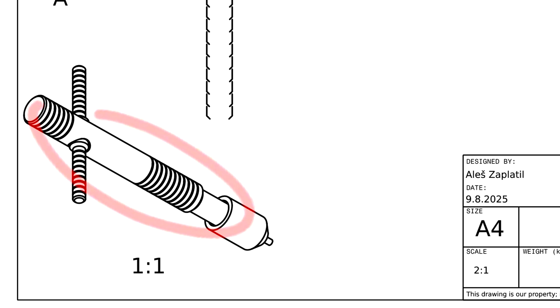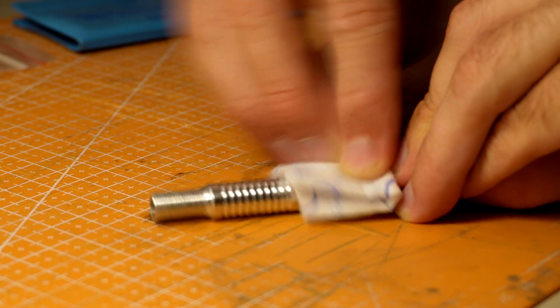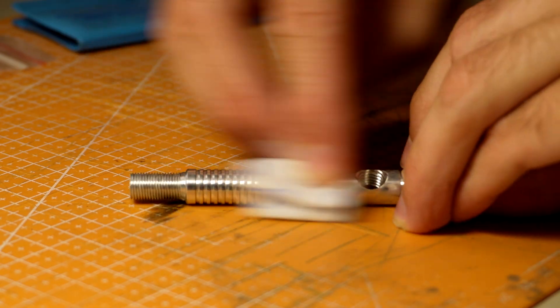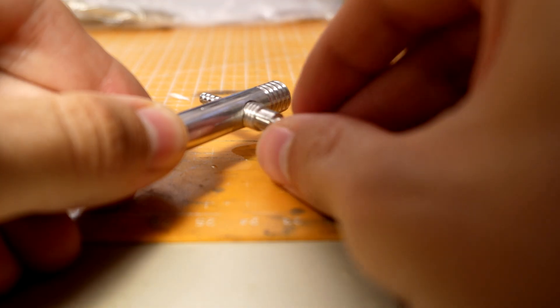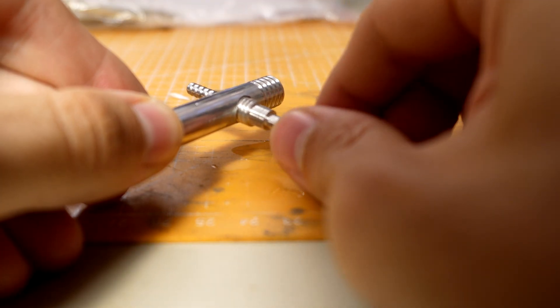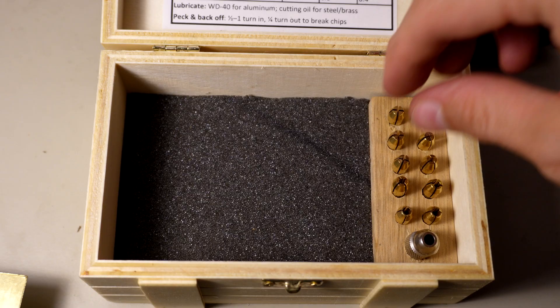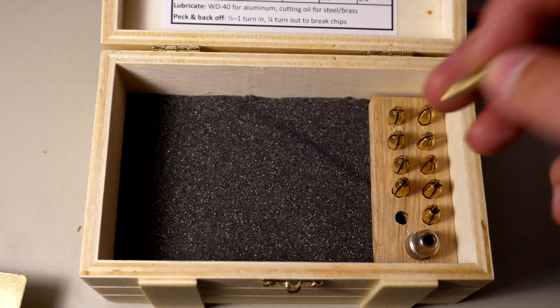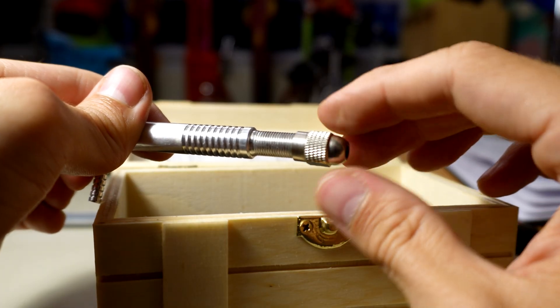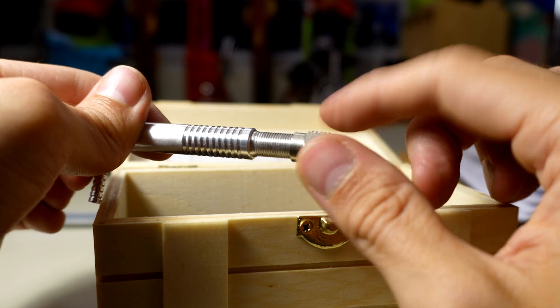Before we assemble everything clean all the parts thoroughly and add a drop of oil to the lever's thread. To make the threading process a breeze choose the correct collet and insert it into the collet holder with the desired tapping drill.